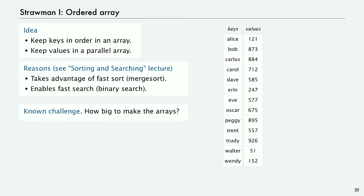But there's one problem: how big do we make the array? We talked about that in the sorting and searching lecture. But there's really a fatal flaw in this, even if you address that one: how do you insert a new key?